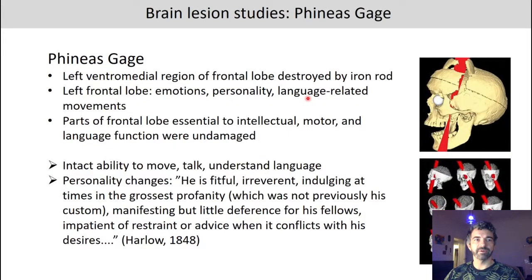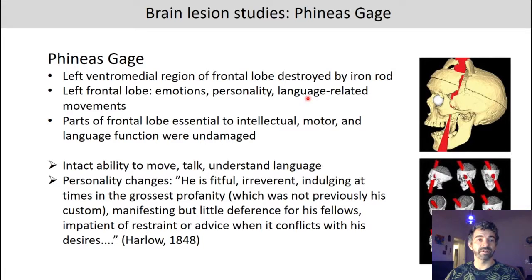If you haven't done so already, I would recommend you watch the short video on Phineas Gage. He had damage to his left ventromedial region of the frontal lobe because of an iron rod. His emotions, personality, and language-related movements were affected, but intellectual, motor, and language functions were undamaged. He was able to move, talk, and understand language, but his personality changed — according to Harlow he was fitful, irreverent, indulging at times in the grossest profanity, manifesting but little deference for his fellows, impatient of restraint or advice when it conflicts with his desires.